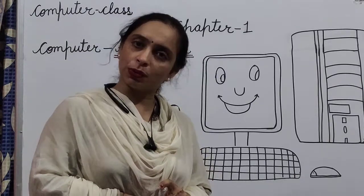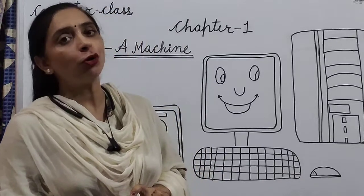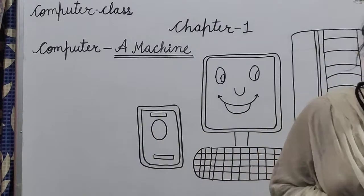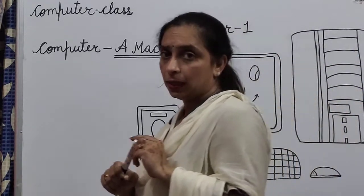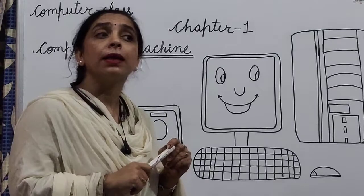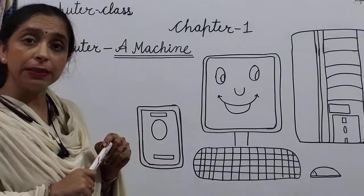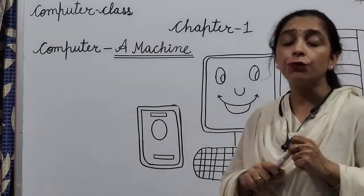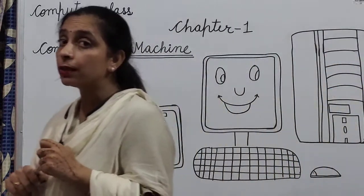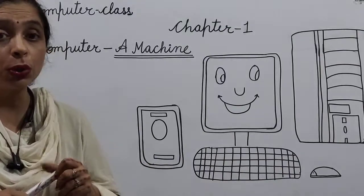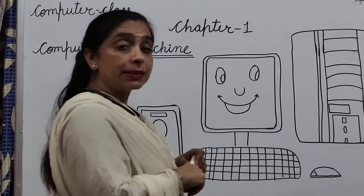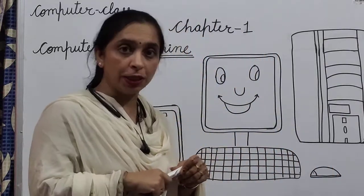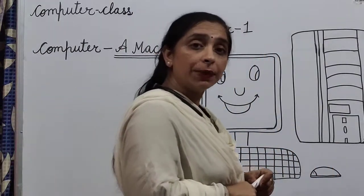We can see computer as information technology. Now we can see many things around us. Some of them are like car, bus, washing machine, aeroplane, TV, fridge, juicer, cycle, auto rickshaw, boat. These all are machines.